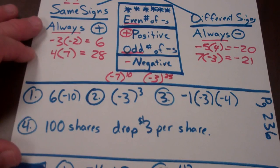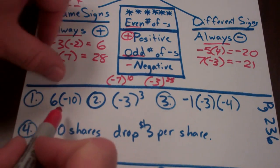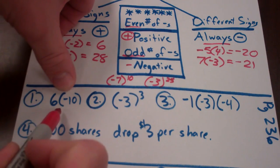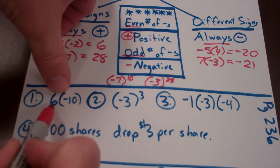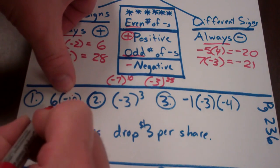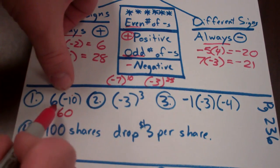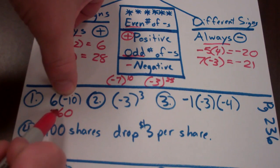Let's do the guided practice on page 236. Problem one: these have different signs so the answer is going to be negative. I could also count the negatives — I have one negative, one is odd, so it's going to be negative.